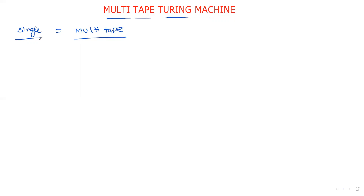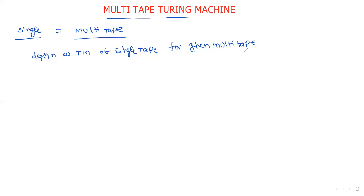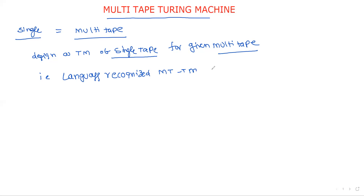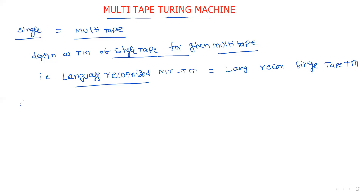To prove that both Turing machines have the same power, we simply design a single-tape Turing machine for the given multi-tape Turing machine. The languages recognized by a multi-tape Turing machine are equal to the languages recognized by a single-tape Turing machine. If both recognize the same set of languages, that means both have the same power.